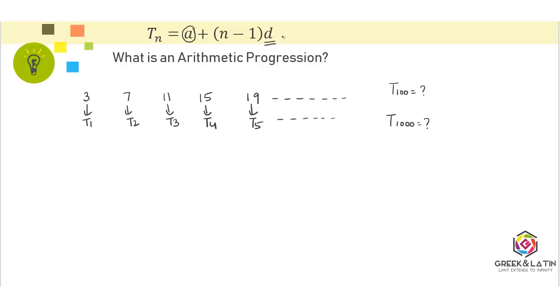Since we want to derive this, let's take the same terminology. Suppose my first term is a. a increases by d, so my next term is a plus d. a plus d increases by d, so my next term is a plus 2d, then a plus 3d, a plus 4d, a plus 5d, and it goes on for as long as we want.